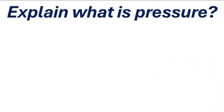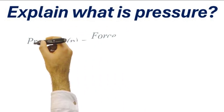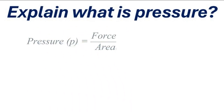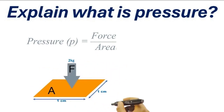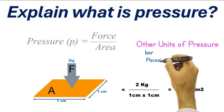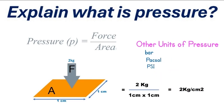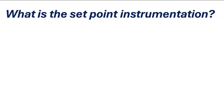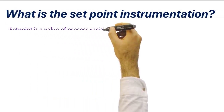What is pressure? The force applied per unit area is called pressure. For example, if there is an area of one centimeter by one centimeter and two kilograms of force is applied to this area, then the pressure applied will be two kilograms per centimeter square. Other measurement units of pressure are bar, pascal, mmH2O, and PSI.